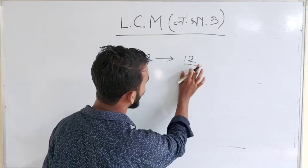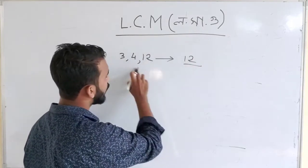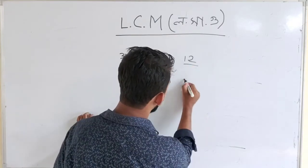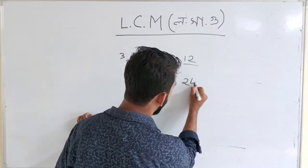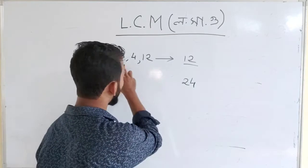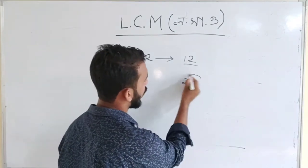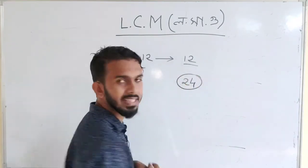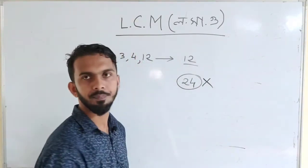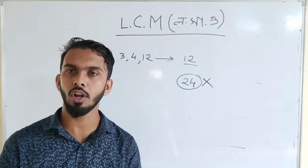Because 12 is a multiple of 3, and 12 is a multiple of 4. Also, 24 means that 12 is a multiple, 3 is a multiple, 4 is a multiple. That means LCM is the lowest common multiple.